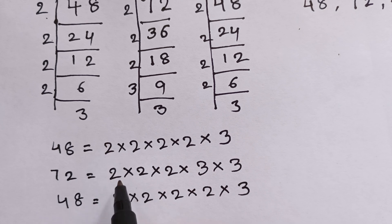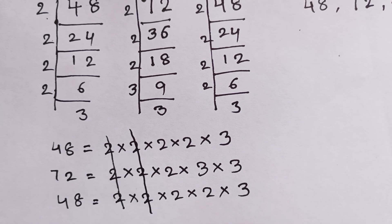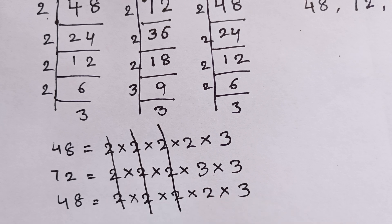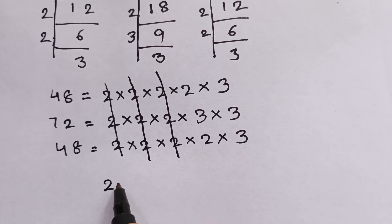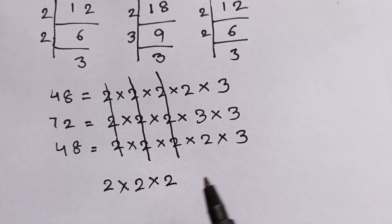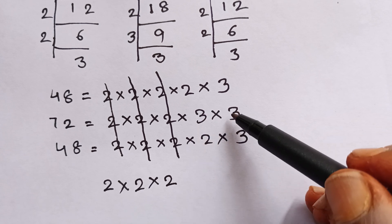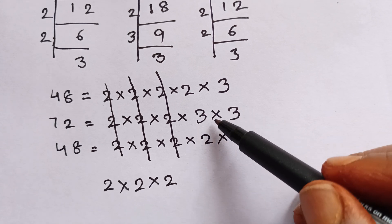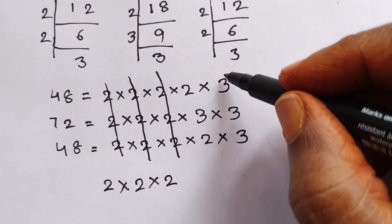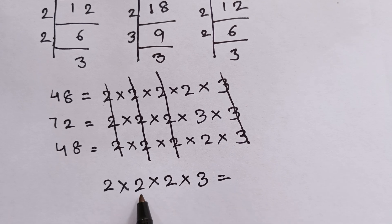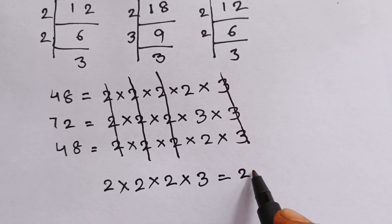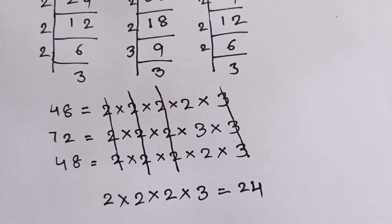If we take all that are common, we can take two, two, two, two in all the digits. We can take the highest common factor: two and two and two. Here, two is there, but in the 72 factors there is no extra factor of two. We take three as it appears in all the tables. So two times two is four, four times two is eight, eight times three is 24 — 24 is the highest common factor.